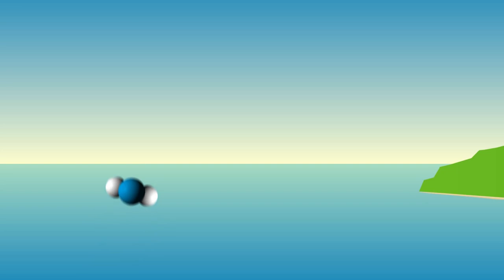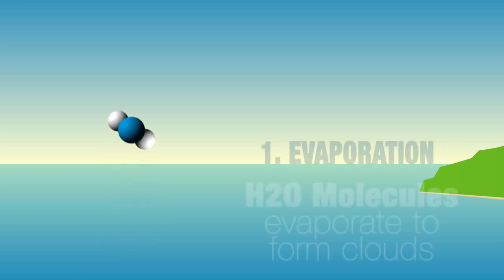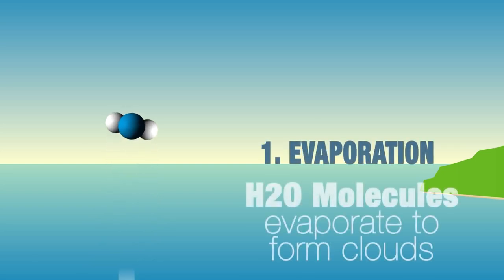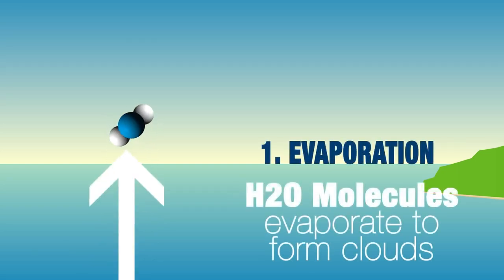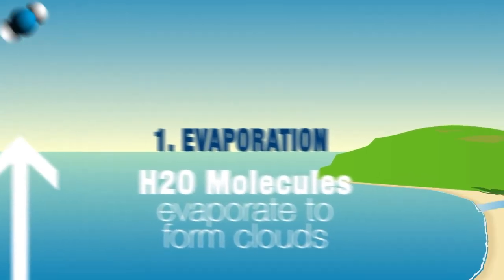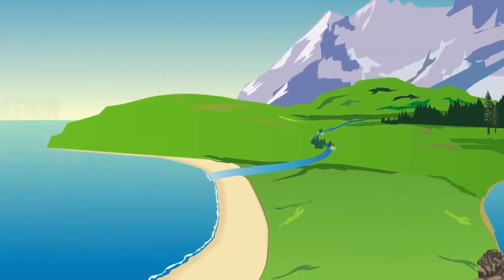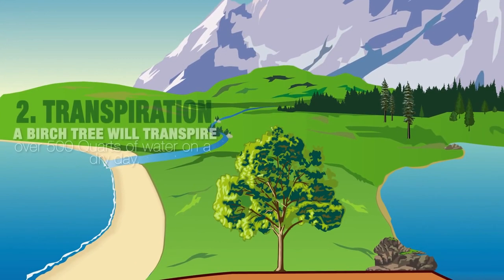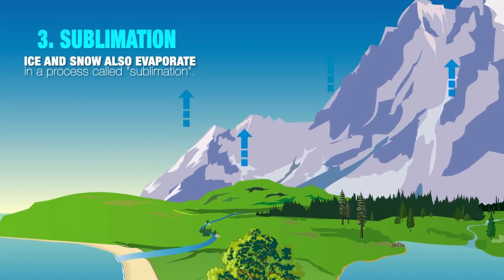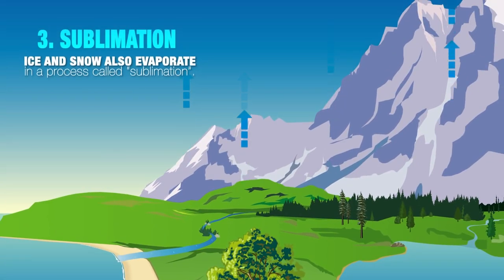Evaporation is when water absorbs heat energy from the Sun, which turns it into water vapor. Transpiration is a process in which trees release water vapor into the atmosphere. Sublimation is when ice and snow converts directly into water vapor.